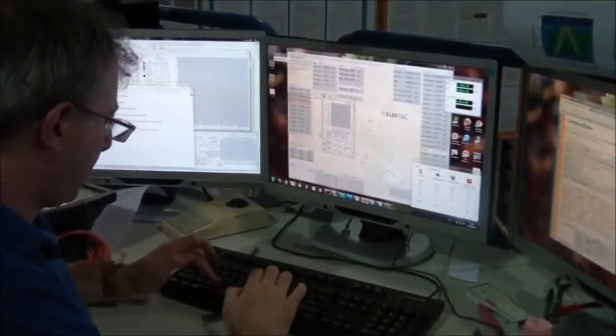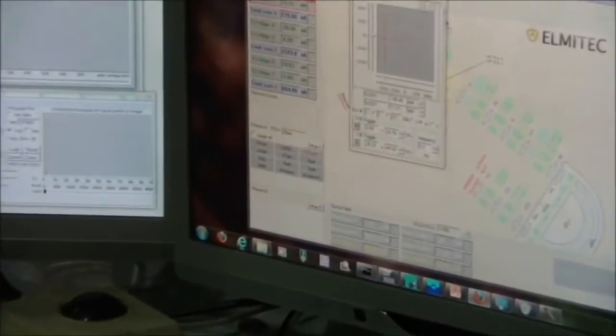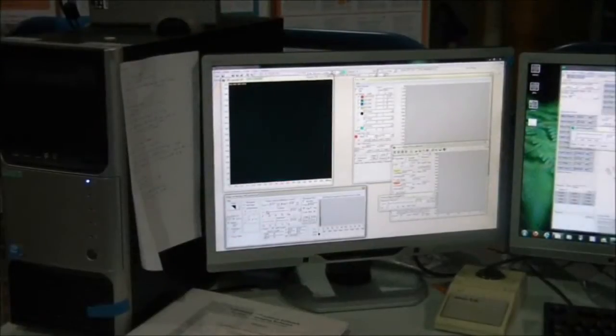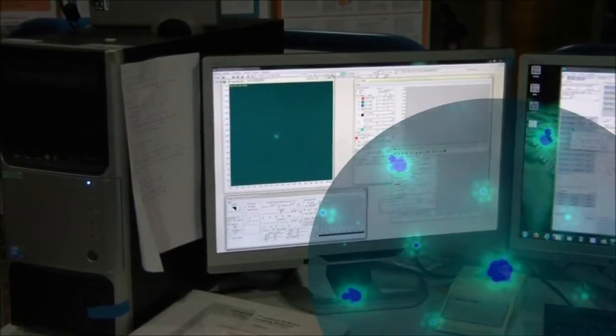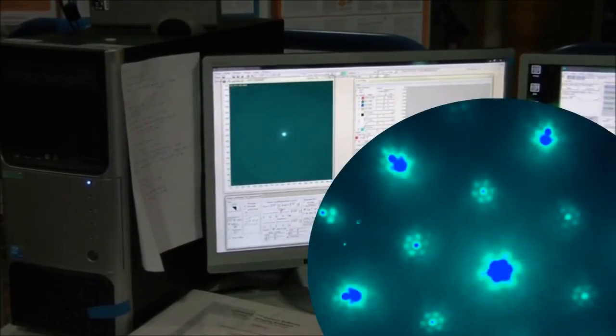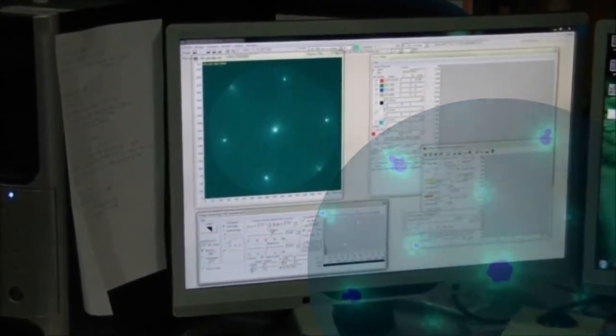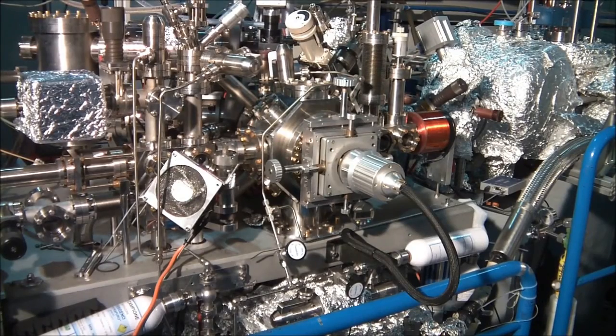Besides imaging, the SPELEEM instrument can also perform microprobe diffraction from micro-sized regions, selected using suitable field-limiting apertures. The microscope can be switched from imaging to diffraction within seconds. Researchers are thus able to observe the low-energy electron diffraction pattern or the angle-resolved photoemission pattern from tiny, microscopic regions, depending on whether X-rays or electrons are used as probe.